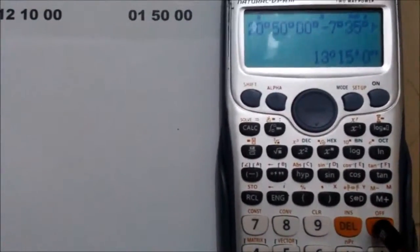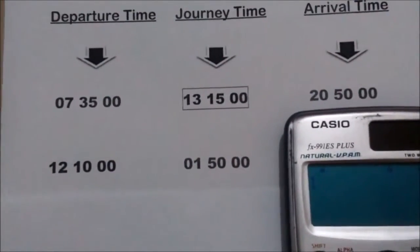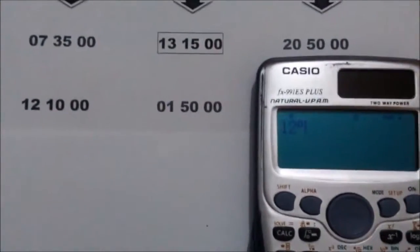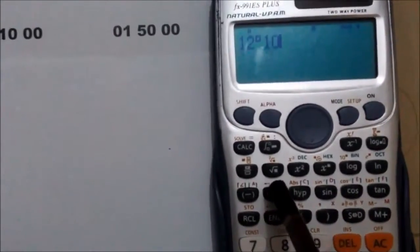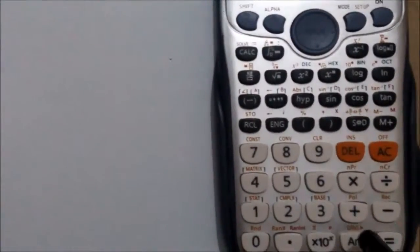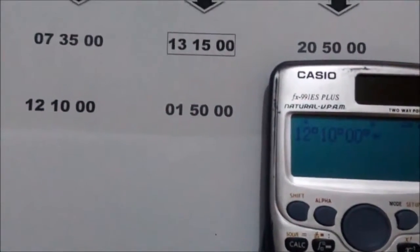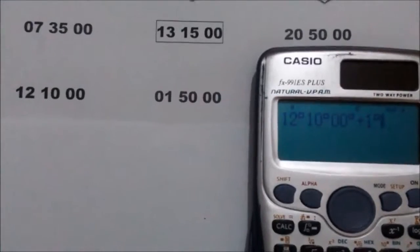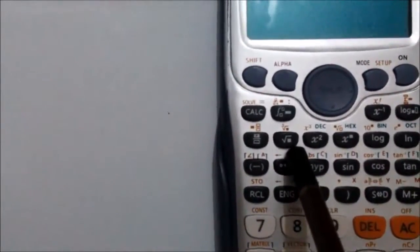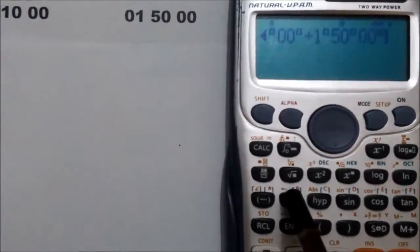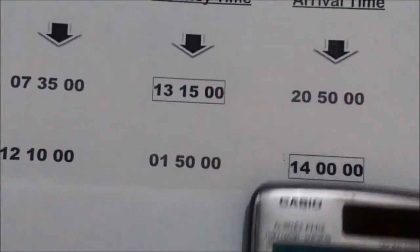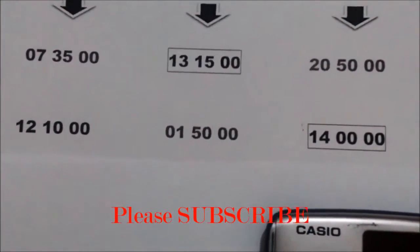Enter the departure time first: 12 hours, press this button, then 10 minutes, press this button, then 0 seconds, press this button. Now press the plus (add) button and enter the journey time: 1 hour, press this button, then 50 minutes, press this button, then 0 seconds, press this button. Now press the equal sign.